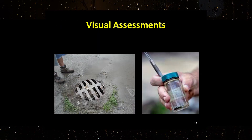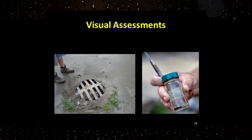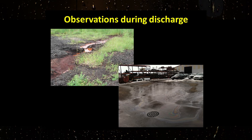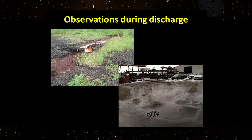The visual assessment involves both noting observations of the stormwater discharging and the assessment of the sample collected from each discharge point. Record your observations of the discharge, including any violations of the narrative standard as a result of the discharge. The following are examples of reportable characteristics in violation of the narrative standard.